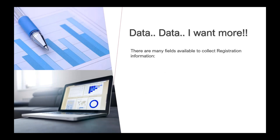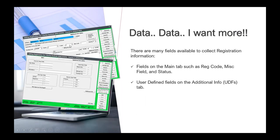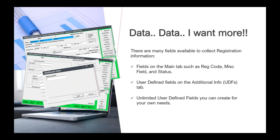Data, data, data — you can never have enough, and Student Manager has lots of data fields for you. In registration data there are a number of fields on the main registration tab: reg code, miscellaneous code, status, t-shirt — which is one of the reg codes. You also have user-defined fields which can be defined at the system level or at the class or course level, plus unlimited user-defined fields available on names, courses, and registrations.